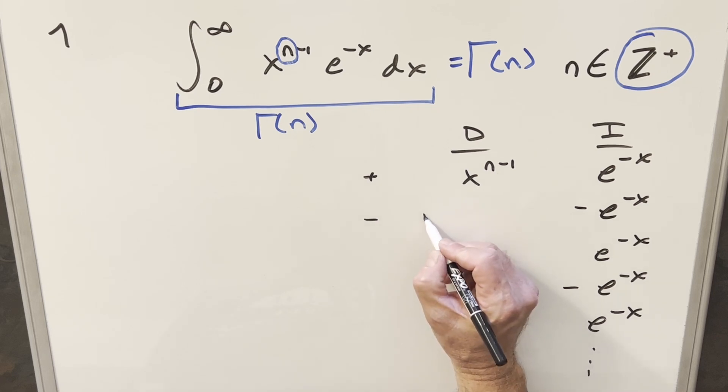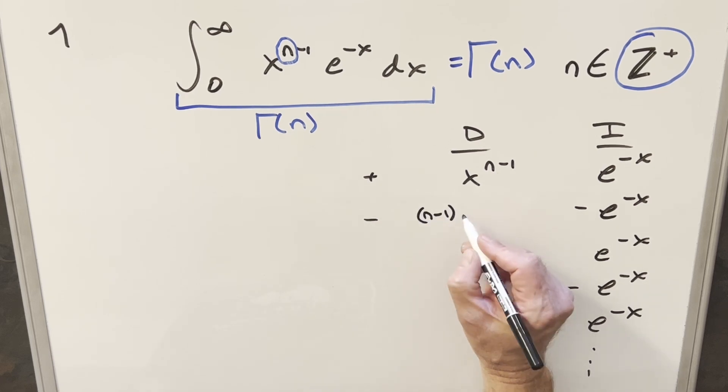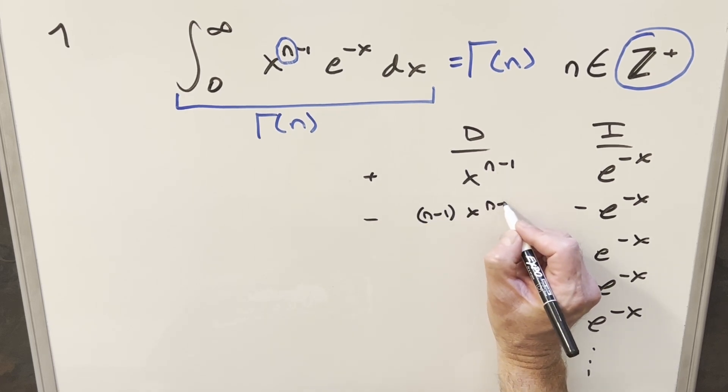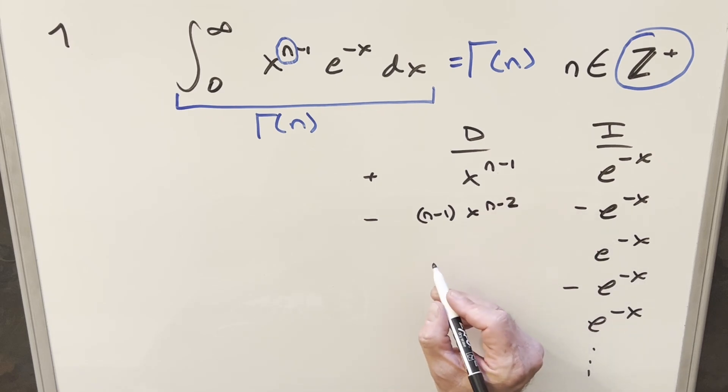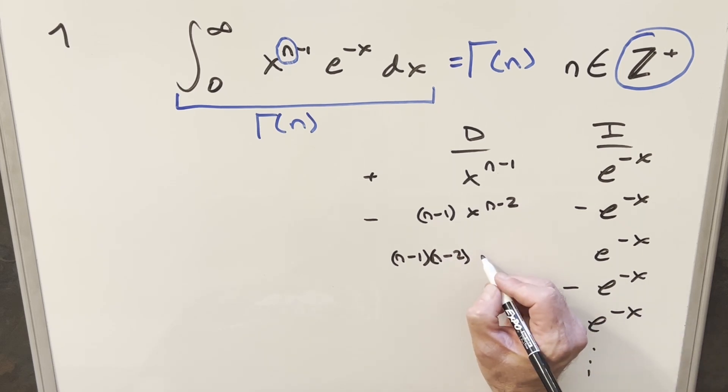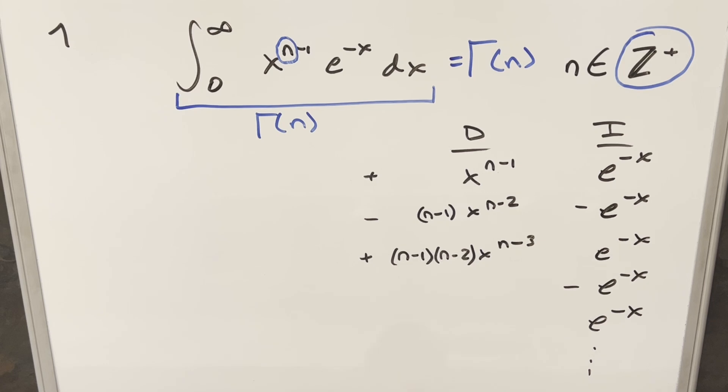And then when you differentiate over here, we're just using power rule. This is going to become n minus 1 times x to the n minus 2. And then the next one, we're quickly going to run out of space, but I'll just do a few of these. So this one's going to be n minus 1 times n minus 2, x to the n minus 3. And then this pattern is just going to kind of keep going like this.